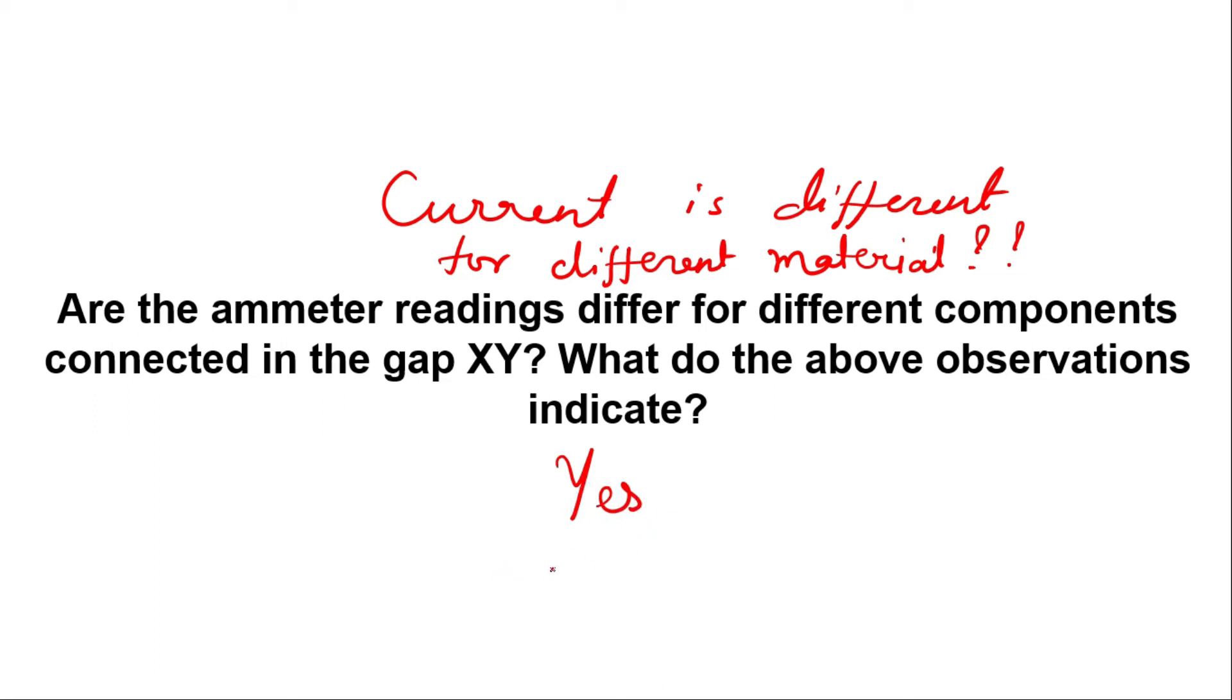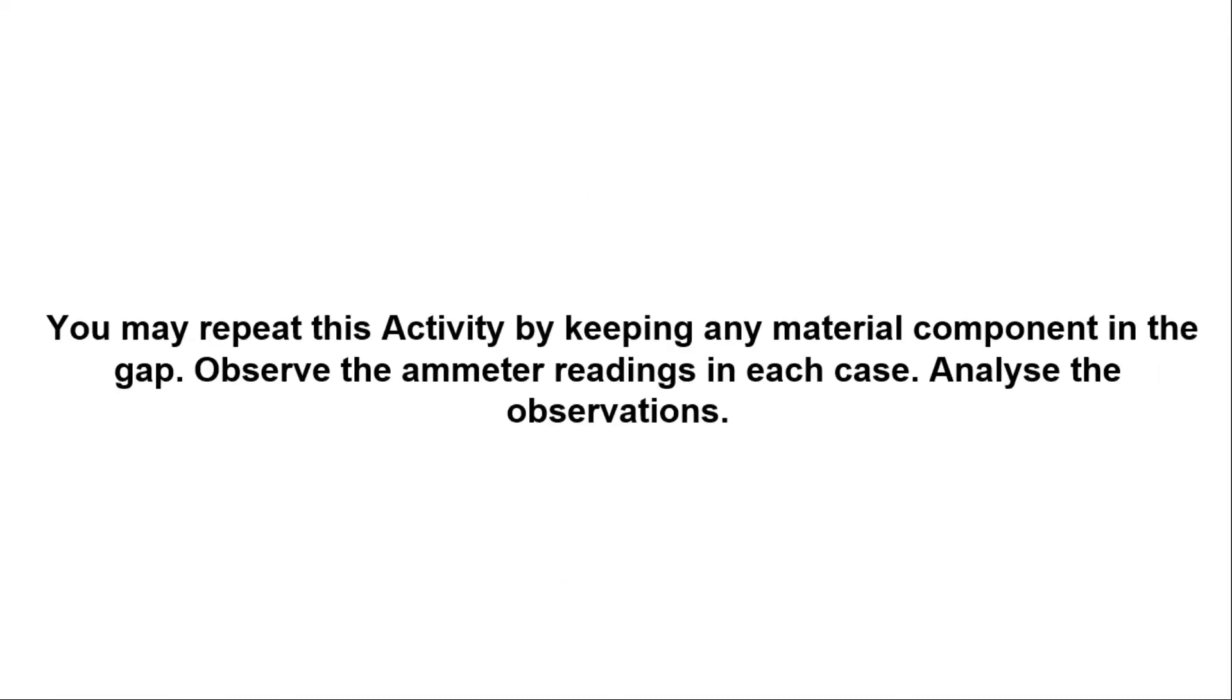The answer is yes. We will find current in the circuit different for different materials. For nichrome wire you will find some different ampere current reading, for 10 watt bulb you will find some different current reading, for torch bulb you will find a different ampere in the circuit. Current will differ for different materials.